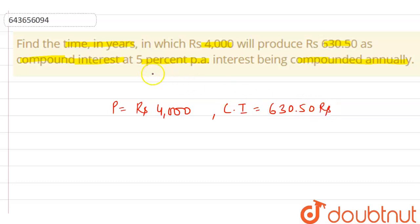It is also given that R equals 5%. Now, we know that the amount A equals compound interest plus principal amount. So the amount is 4000 plus 630.50, which equals Rs 4630.50.